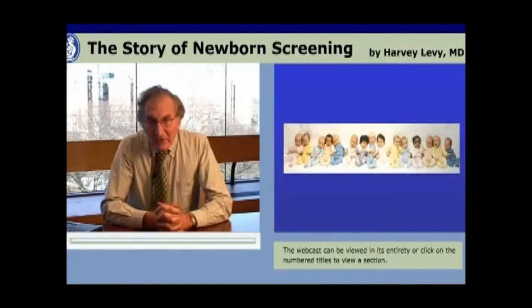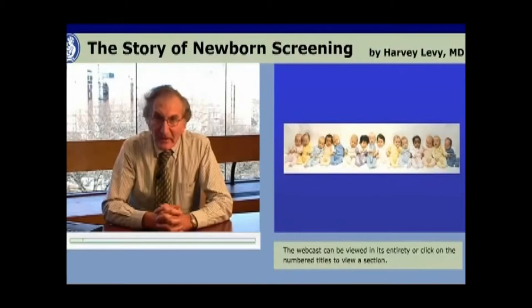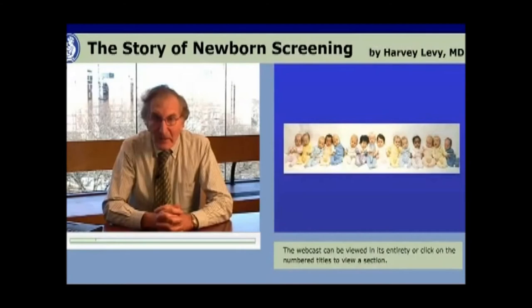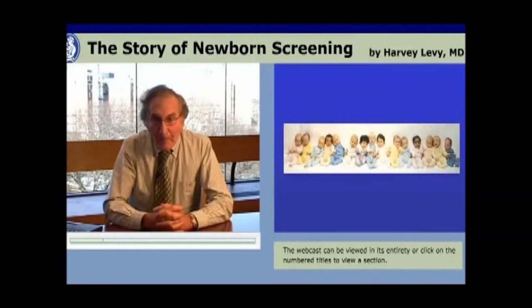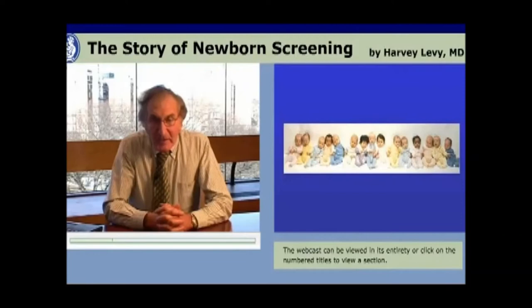The challenge now became: how does one prevent mental retardation in all children born with PKU? In the earlier studies, PKU was discovered in the newborn period in individuals born into families where PKU was already known — usually a sibling was already mentally retarded from PKU. Another baby comes along in the family, they anticipate that baby may have PKU, test specifically from the very first day, and found that the baby had PKU or ruled it out.